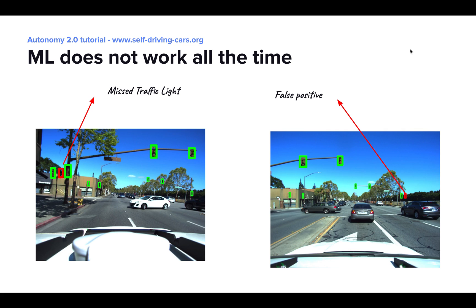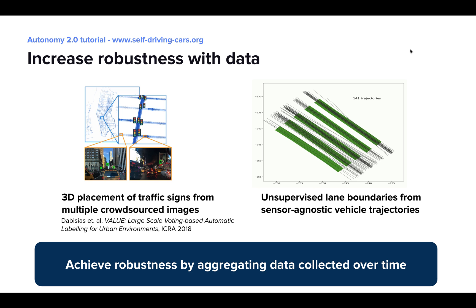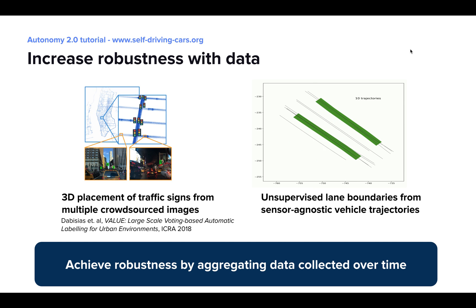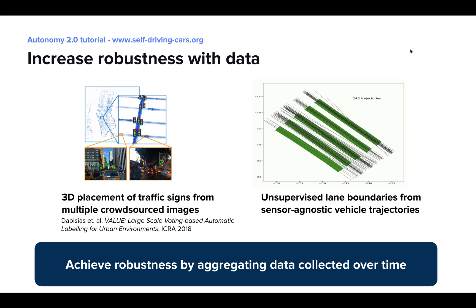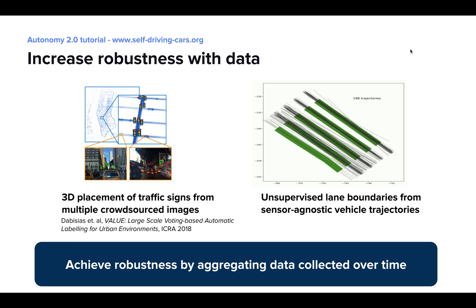One problem with ML, though, is that it does not work all the time. For example, a traffic light detector could miss a traffic light, or a lane detector might recover lane boundary positions with some inaccuracies. One way to tackle this is by aggregating data collected through time, which is the same principle we saw for geometric maps earlier. On the left, we apply this principle to traffic lights and other traffic signs — while an ML model might miss a traffic light from a single observation, we can reach robustness by aggregating multiple observations, as it is much less likely the model will miss the traffic light in all of them. On the right, we apply the same principle to detecting 3D lane centers, by aggregating many trajectories of vehicles driving through a street over time. And you can see that things get better the more data and trajectories we have.